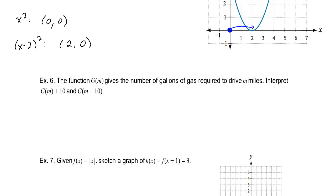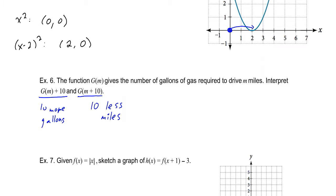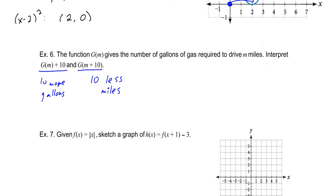Example 6: the function g of m gives the number of gallons of gas required to drive m miles. Interpret g of m plus 10, and g of m plus 10 where the quantity m plus 10 is in the parentheses. g of m plus 10 means 10 more gallons of gas. g of m plus 10 — with the m plus 10 inside — appears to mean 10 more miles, but since m plus 10 shifts the function to the left, it actually means 10 fewer miles, giving a different amount of gas required.